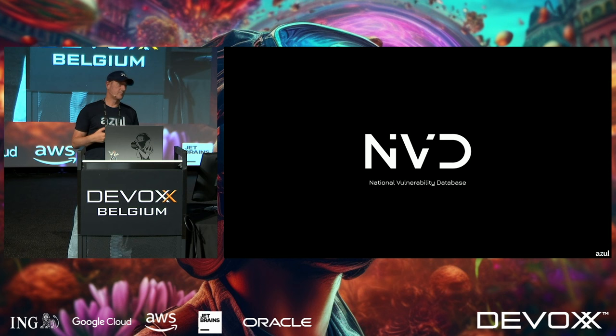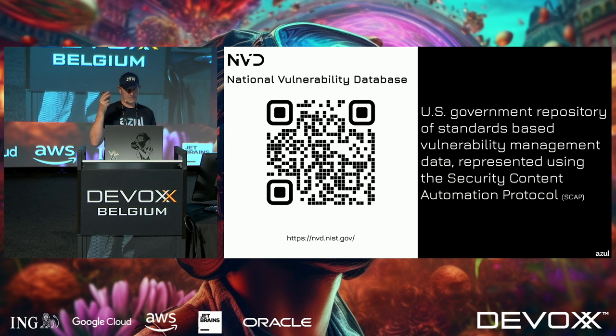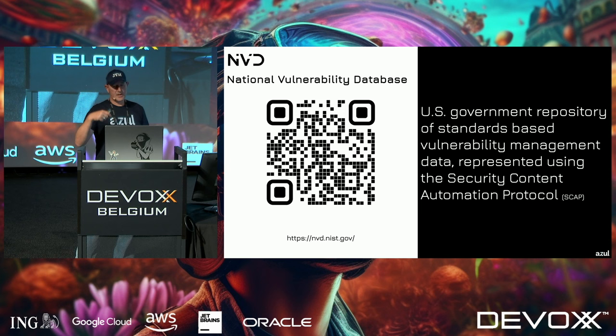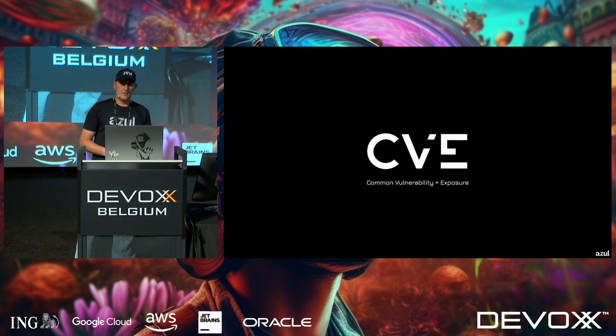Then there's the NVD — the National Vulnerability Database — handled by the US government but globally available. It even has an API with a free API key, so you can integrate it into your application. It uses the SCAP protocol (Security Content Automation Protocol) to manage all vulnerabilities. You can find it at nvd.nist.gov.